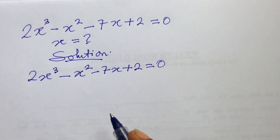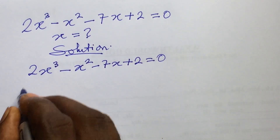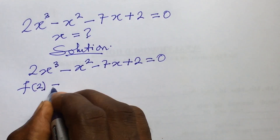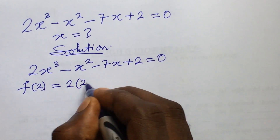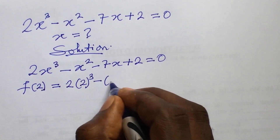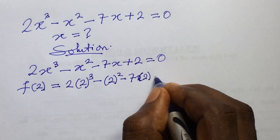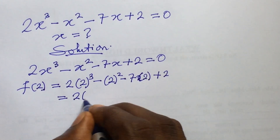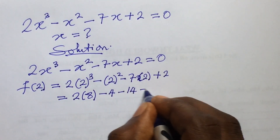From this question, we use the trial-and-error method first to get one of the roots of this polynomial. Going by that method, we discover that f(2) will give us zero. So let's substitute x = 2 into the equation: 2(2³) - (2²) - 7(2) + 2.